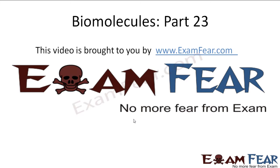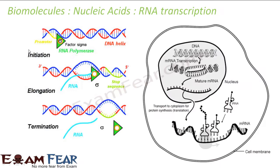This video on biomolecules part 23 is brought to you by examphia.com. So we'll see how DNA works. This is my DNA — a DNA helix. The process of creating RNA starts here: once RNA is created, it comes out of the nucleus. In this cell I have a nucleus, and in this nucleus I have DNA, so this DNA will synthesize RNA and this RNA will come out of the nucleus.